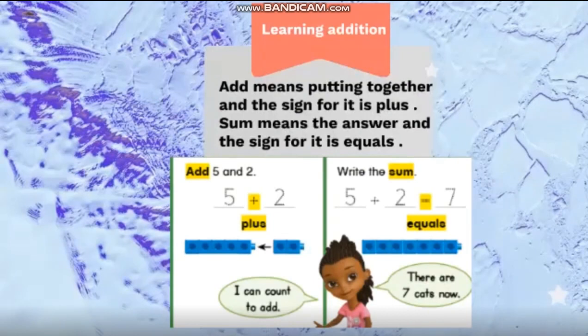To add numbers together, I need to count. So if I have five, then my friend gave me two, then I need to put five in my mind, then count two more. So five, six, seven, excellent.